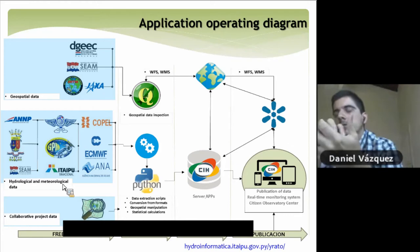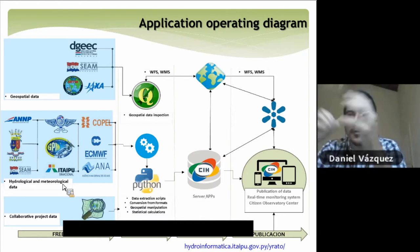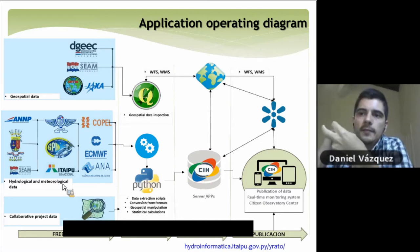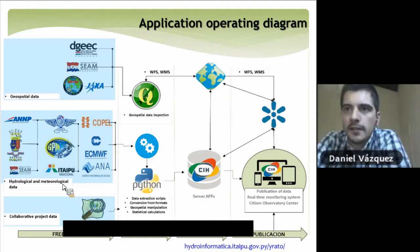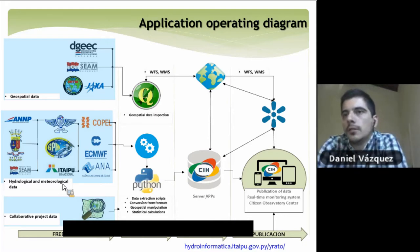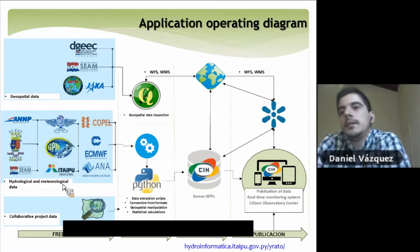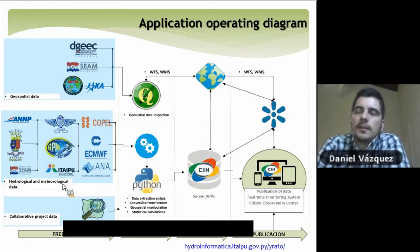The second component is more related to the process in general. For this, we use the programming language Python in order to make data extractions from all these sources, to develop the scripts, to convert from different formats to convenient ones, to manipulate geospatial data, and to make many types of calculations. We also used Python to take control of different models provided for this project. We also made use of free GIS software in order to inspect all the information being collected.